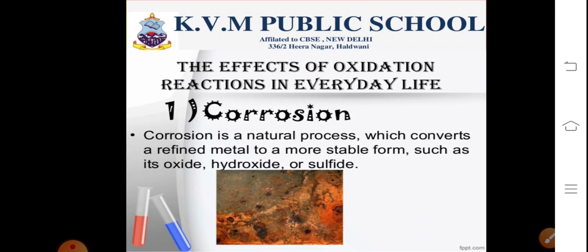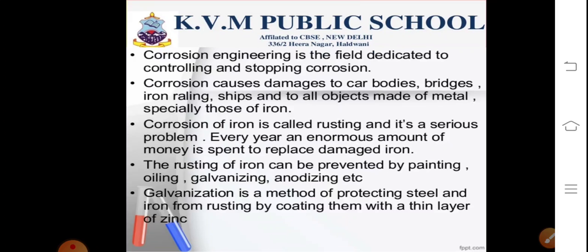Moving on to the effect of oxidation reactions in everyday life. Firstly, we will discuss about corrosion. When a metal is attacked by substances around it such as moisture or acids so that it gets corroded, the process is referred to as corrosion. Examples of corrosion include rusting of iron, tarnishing of silver, the black coating on silver, and the green coating on copper. Corrosion causes damage to car bodies, bridges, iron railings, ships, and all objects made of metals, especially iron.